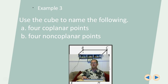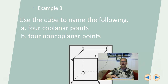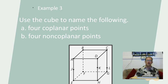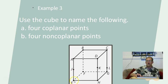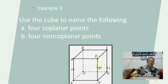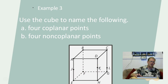Let's use this cube to name the following. Four coplanar points: A, J, E, and H are all on one face of the cube, so they're coplanar. You could also pick K, D, C, and L — they're all on another side of the cube, all coplanar. For non-coplanar points: C, A, F, and K — you could not draw a single plane that captures all four of those points, so they are non-coplanar.